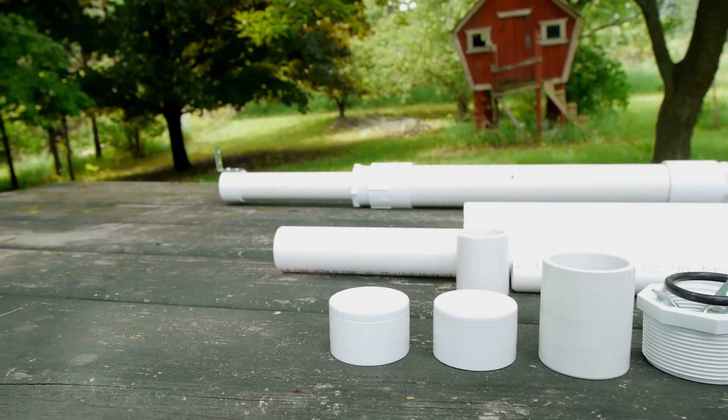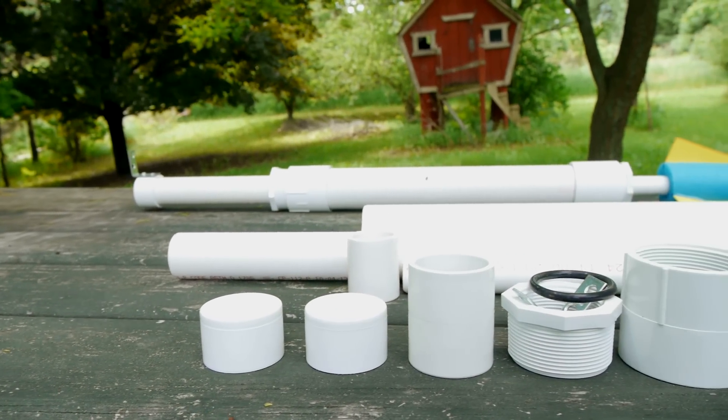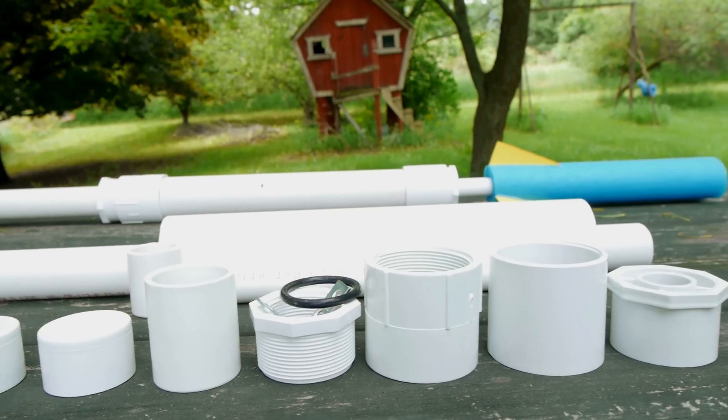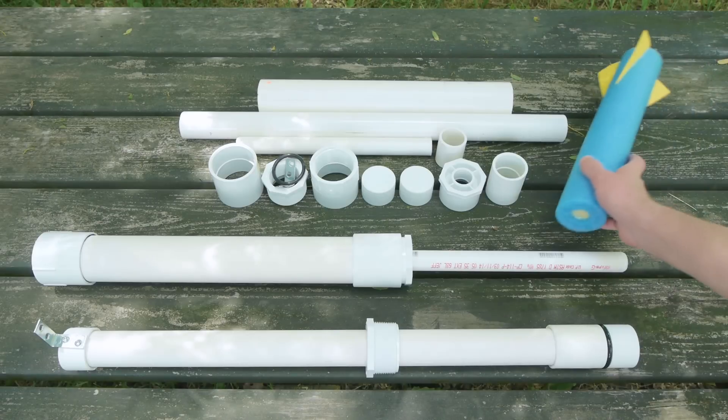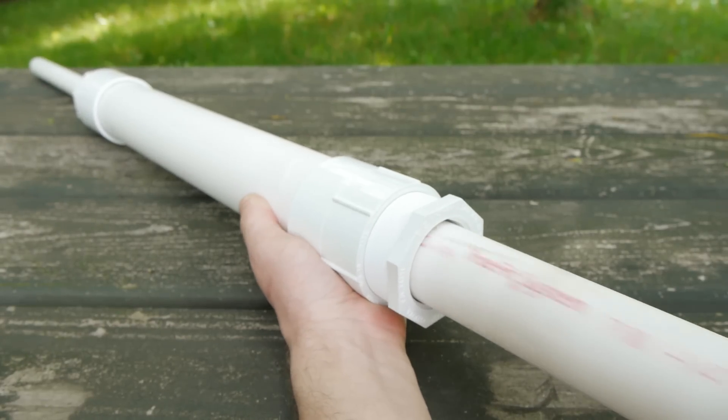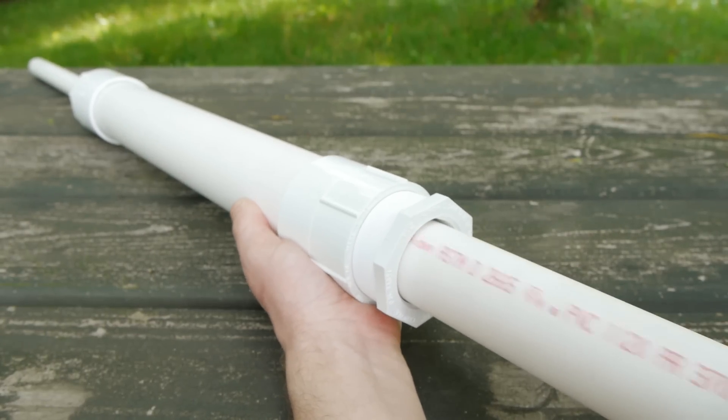I start this project with an array of PVC pipe and fittings. The full parts list can be found in the video description below. The launcher consists of an exterior housing to which the barrel is attached, and a plunger and piston which fits inside to push the air that fires the rocket.